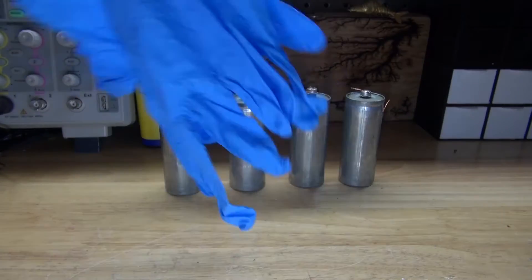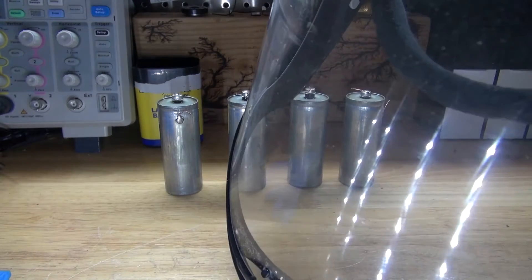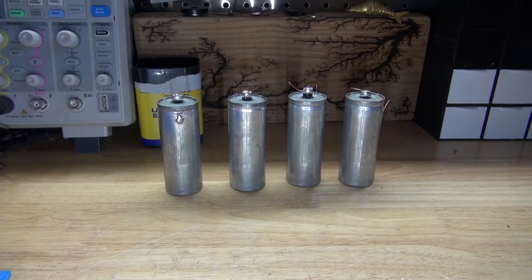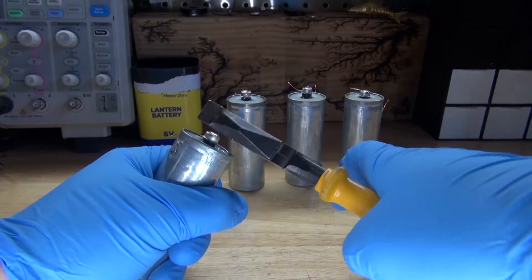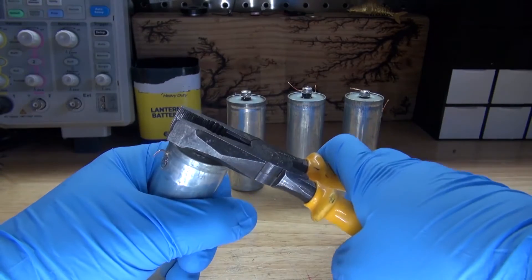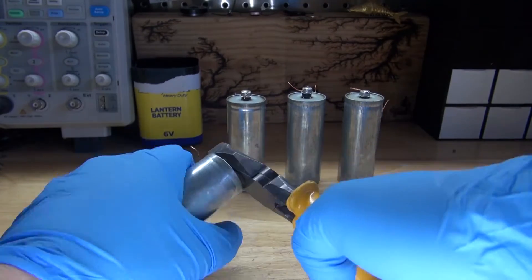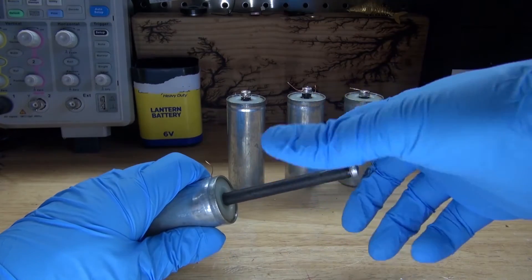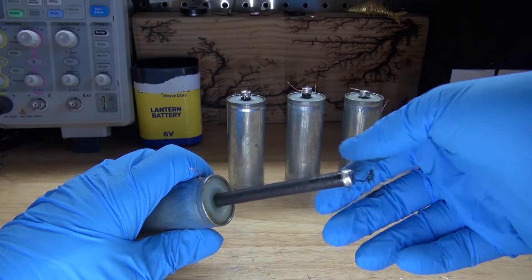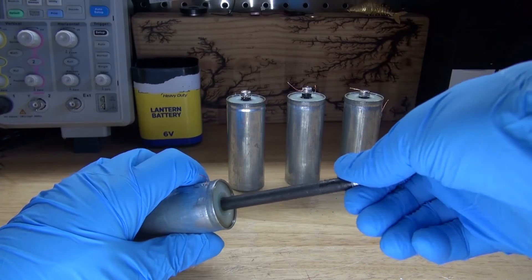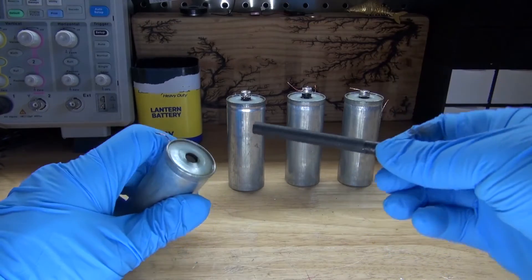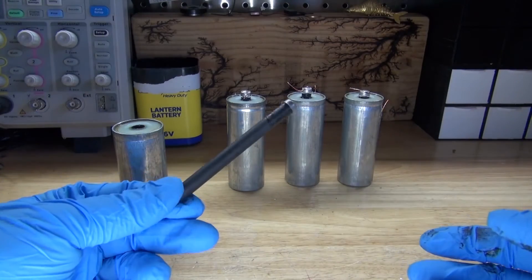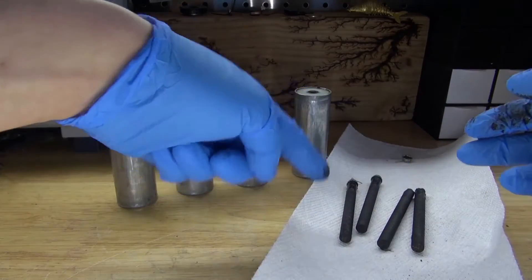I'm going to wear gloves because manganese dioxide is very messy and also have a face shield for protection and a face mask because you don't want to breathe the particles of graphite. Take some pliers and pull out the carbon electrode rod using a twisting motion. Finish pulling it out using my hand. As you can see, wearing gloves is necessary. You get this sticky stuff on your hands. And there I have the carbon electrode rod. Now repeat the same process 3 more times. And there I have all 4 carbon electrode rods.